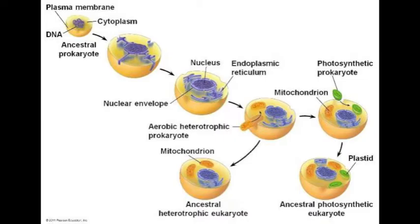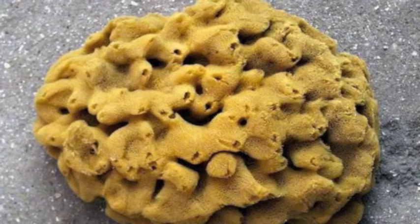Protists are said to have evolved from simple communities of prokaryotic cells by the process of membrane unfolding. In some prokaryotic cells, parts of the plasma membrane folded into the cell to make the structure and organelles. A process called endosymbiosis was then used to create the mitochondria and chloroplasts, in which a prokaryotic cell enters a eukaryotic cell as food or a pest and ends up becoming a part of it.